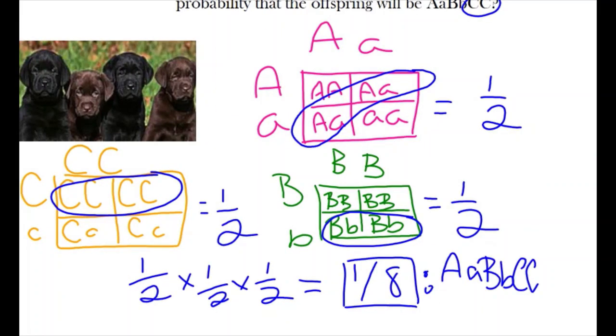If we multiply all of our probabilities, we get our final probability of getting the genotype capital A, lowercase a, capital B, lowercase b, and capital C and capital C as one-eighth.